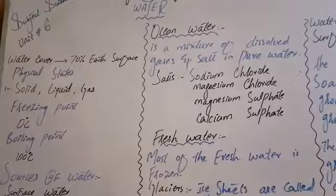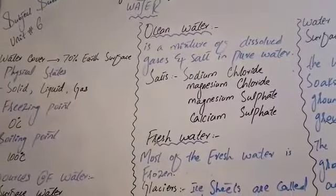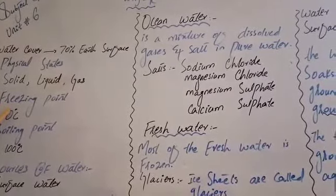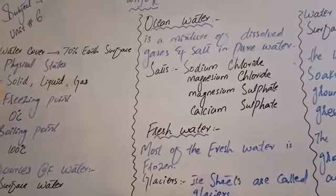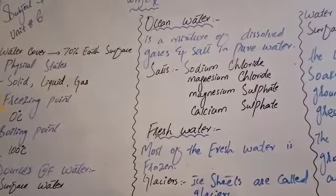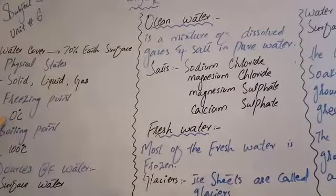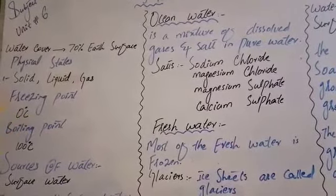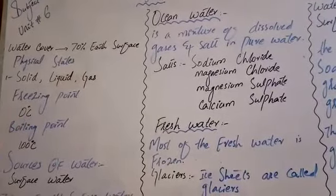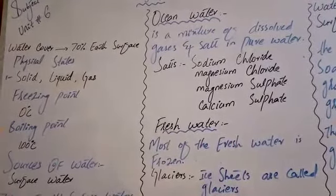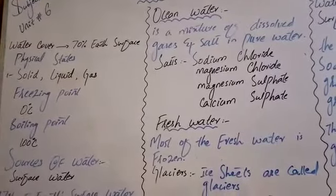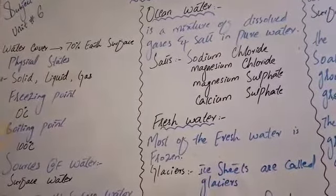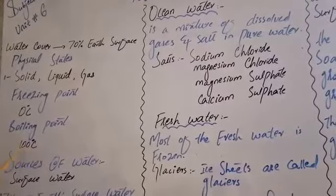Water has different boiling and freezing points on the Celsius scale. The freezing point is the temperature at which water is converted into ice — that is 0 degrees centigrade. The boiling point is the temperature at which water starts boiling — that is 100 degrees centigrade.